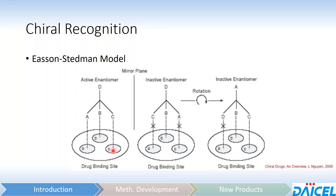A, B, and C could be something like hydrogen bonding, pi-pi stacking, and dipole-dipole interactions. Your active enantiomer — the one that is going to be retained the longest — obviously has a nice match of those three interactions, so there will be some amount of binding energy.